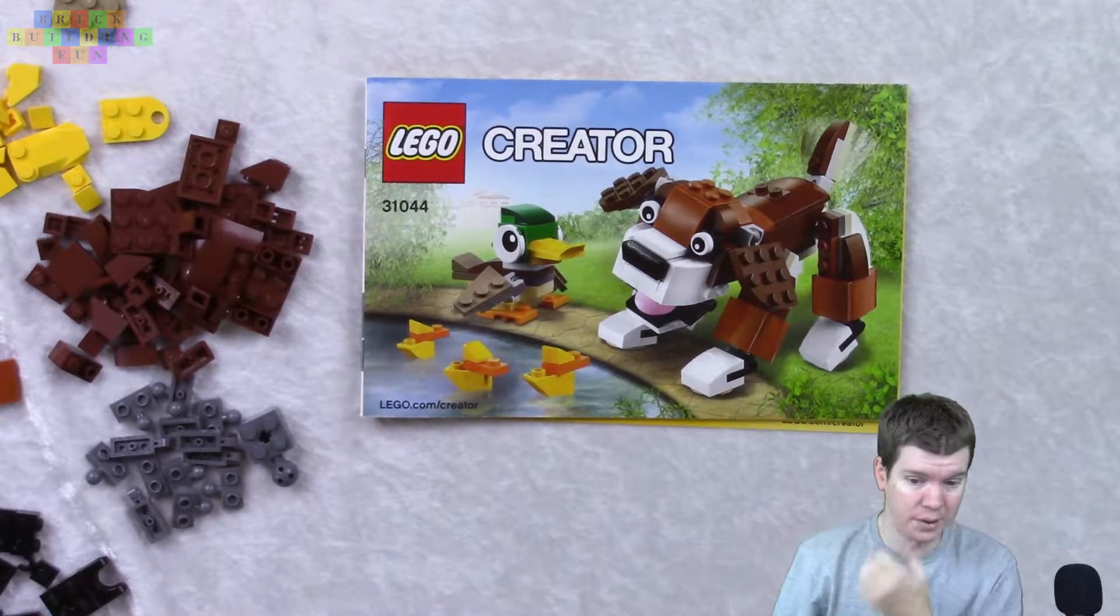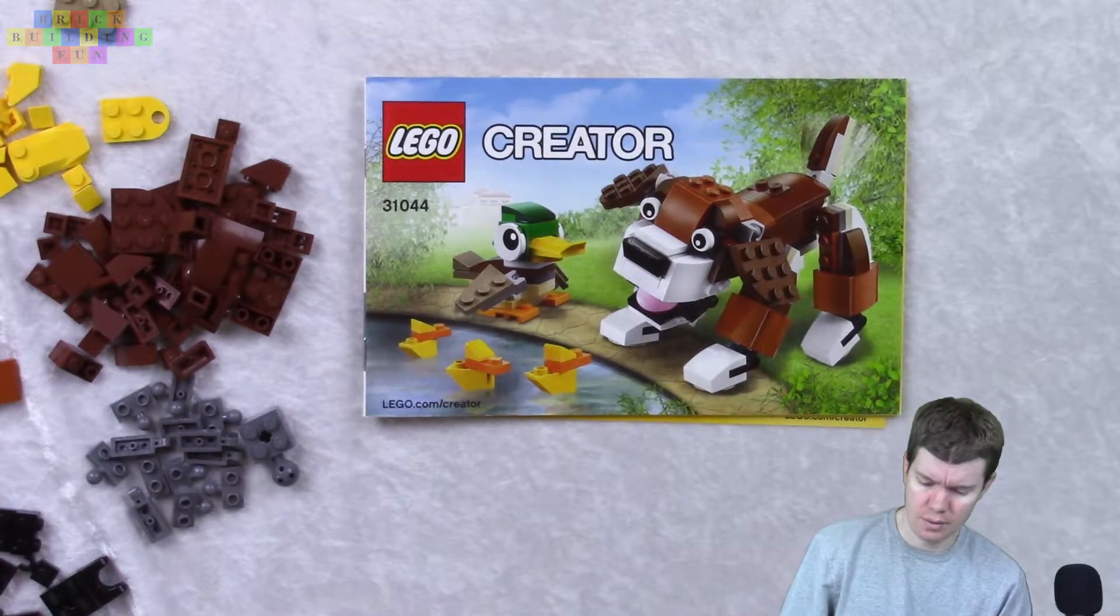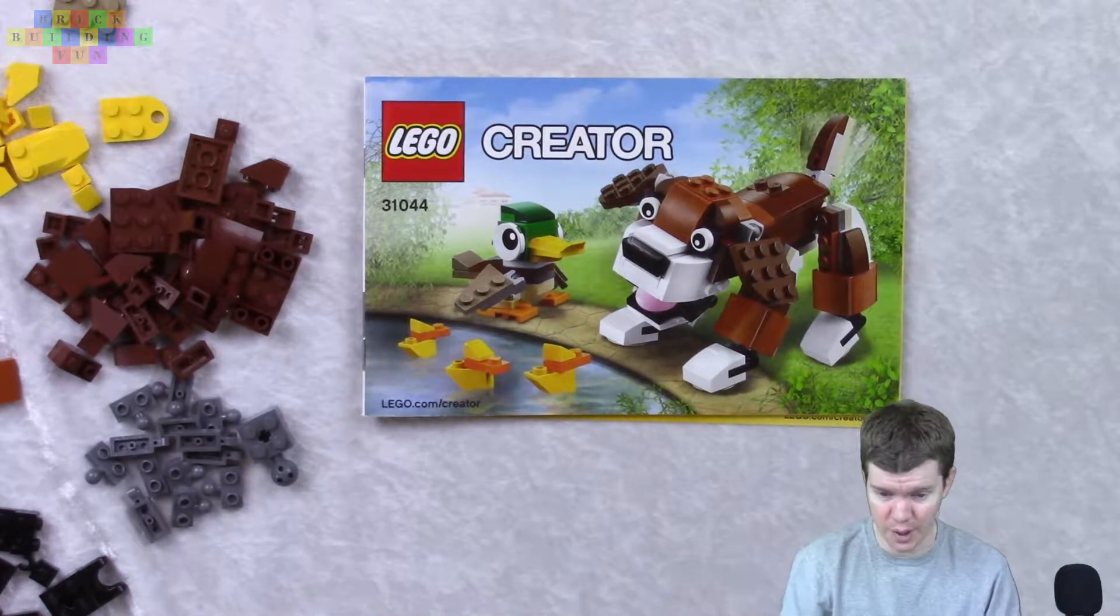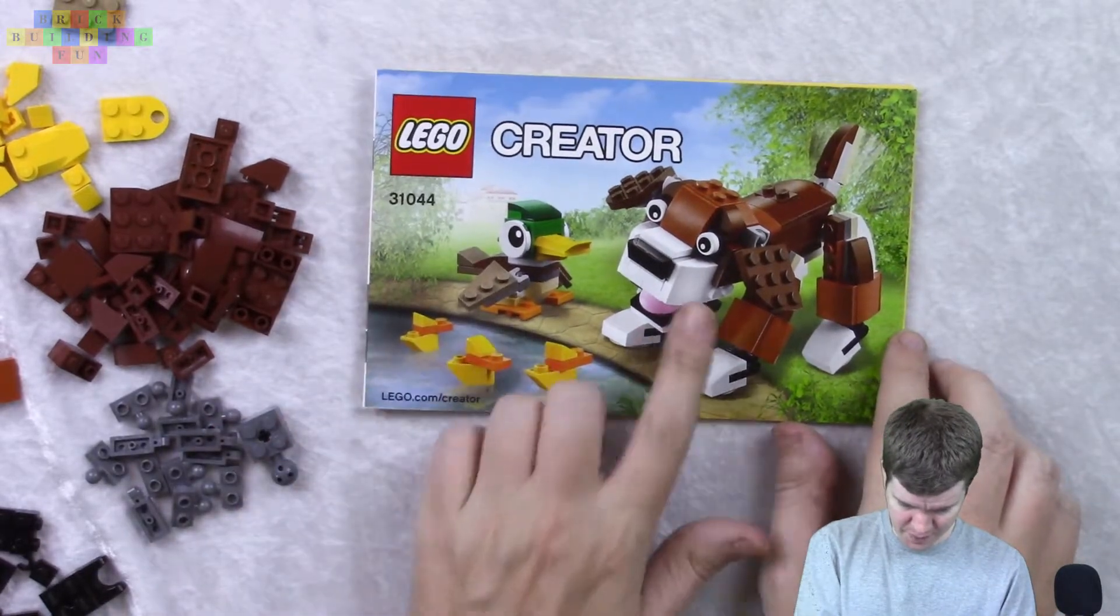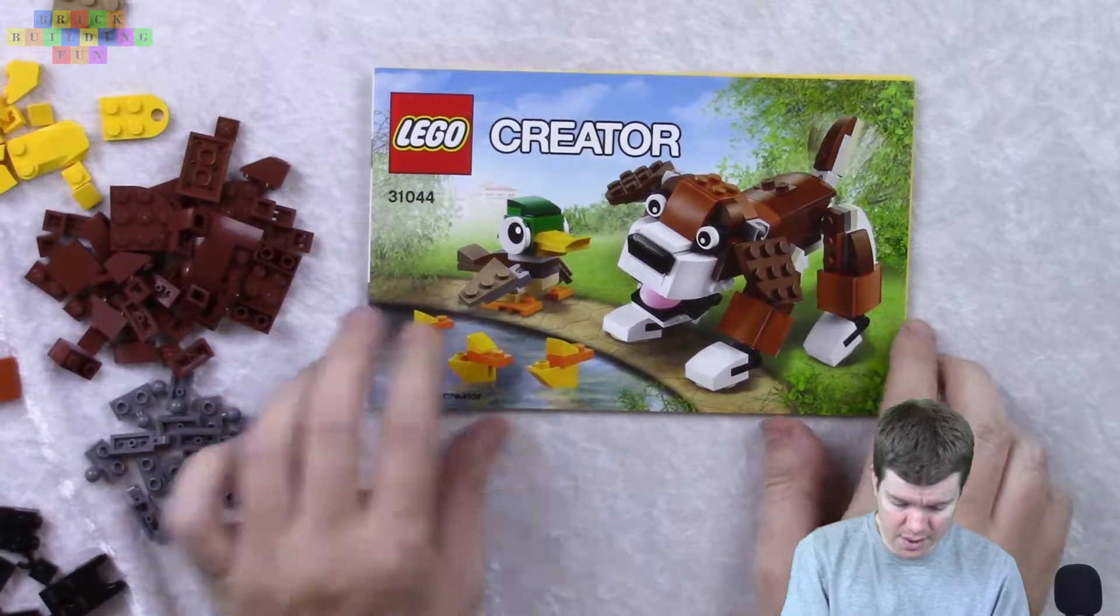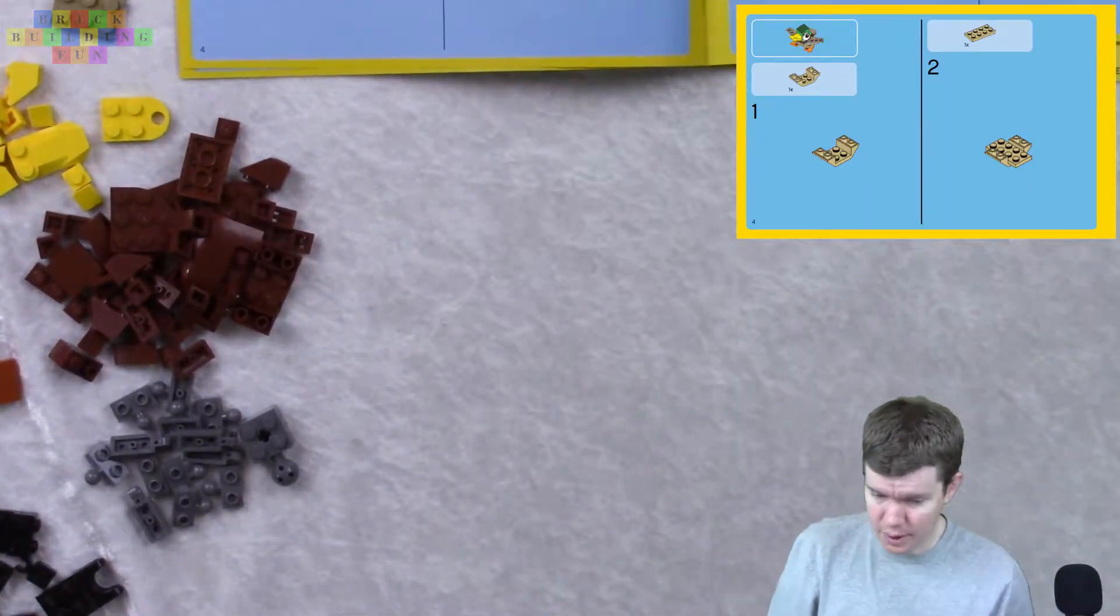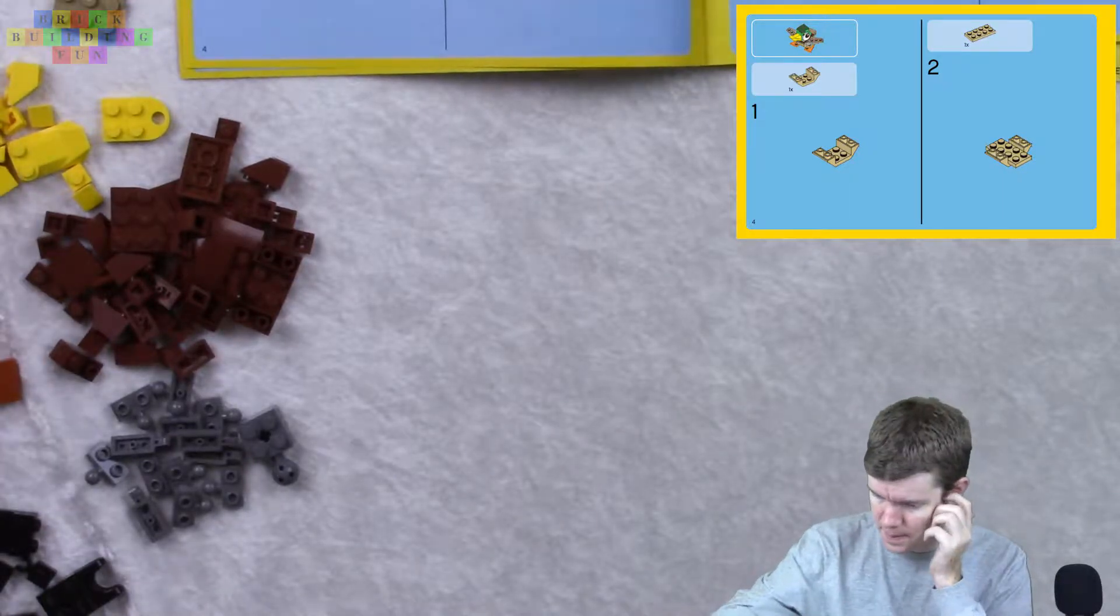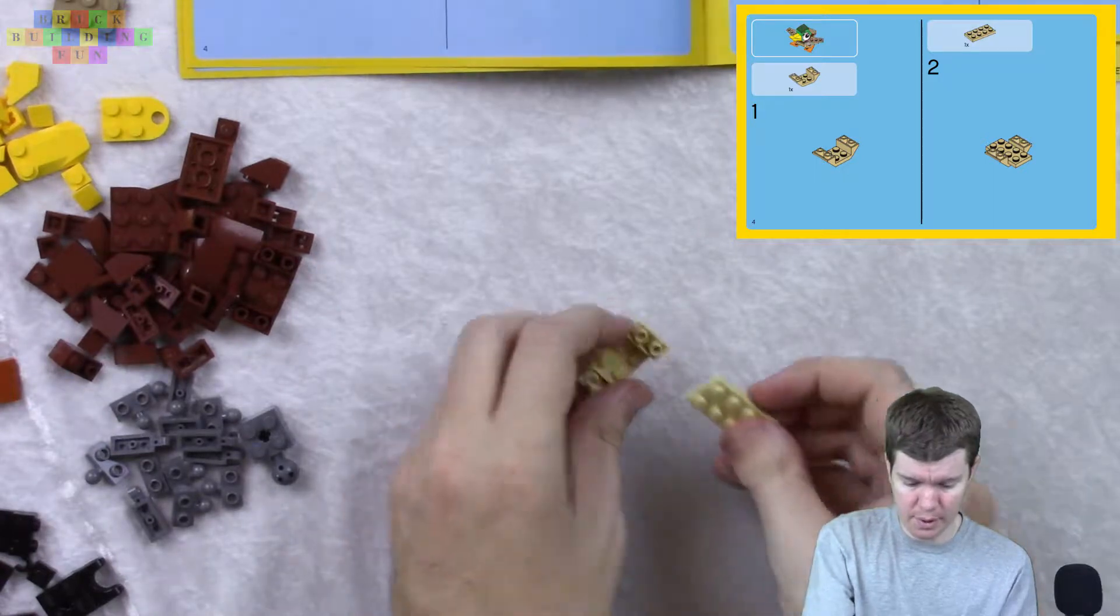We are on the third build of this Lego Creator set, Set 31044 Park Animals. We are finally building the thing that I want to display, which is the puppy and the ducks. Hooray! We are going to build a duck first. Fine then. Build the puppy later, I guess.